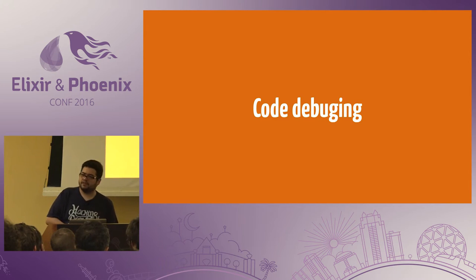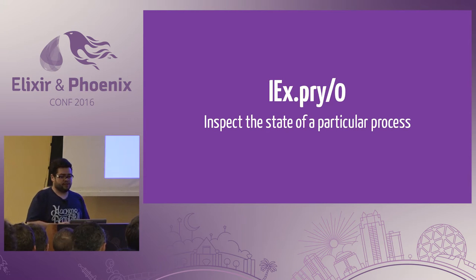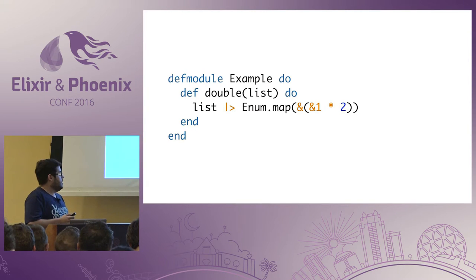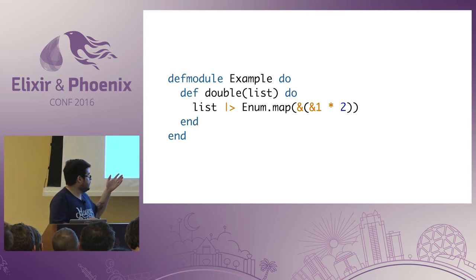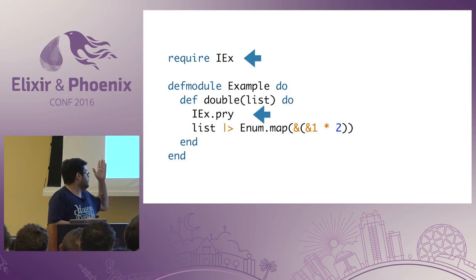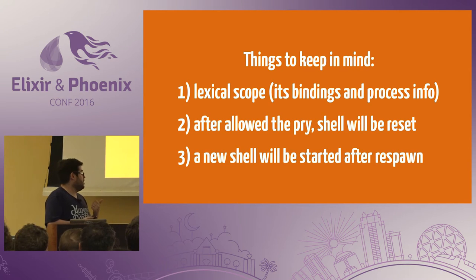Some developers prefer to be simple and only use inspect. Others prefer more robust tools. So Elixir has IEx.pry, which inspects the state of a particular process. Maybe you already heard about it in Ruby — it's a little bit different. From the previous example, we are multiplying by two a list given by the user, and to use pry we just need to require the module and call our function. In this case the function is double. When we call it, we start the pry. Things to keep in mind: first, we have access only to the lexical scope — so bindings and process information.